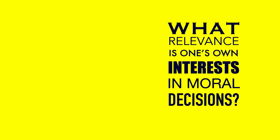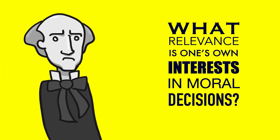Let's see if you grasp the full ramifications of what Mill is talking about. So let's ask: what relevance is one's own interests in moral decisions? What role do your own interests, your own happiness, your own pleasure — what role does that play in making a decision?